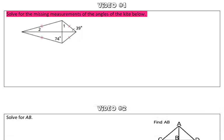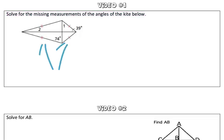In this first problem, we were asked to solve for the missing measurements of the angles in the kite below. What we learned is that kites are actually made up of two isosceles triangles.